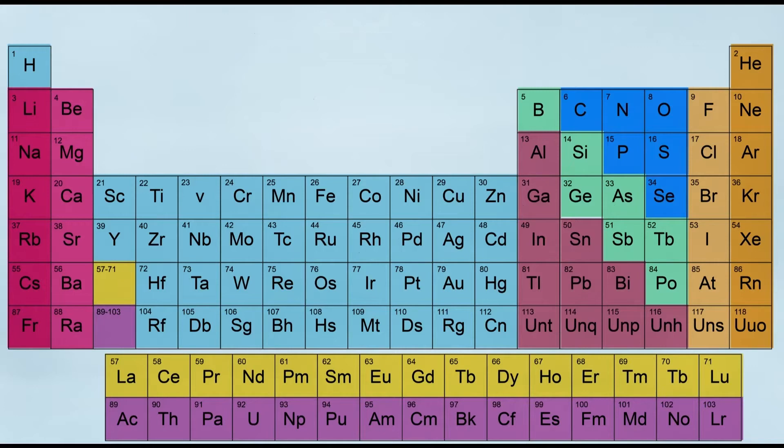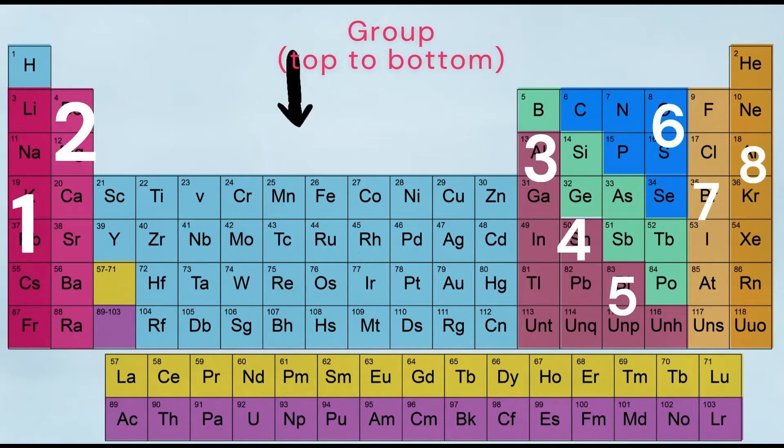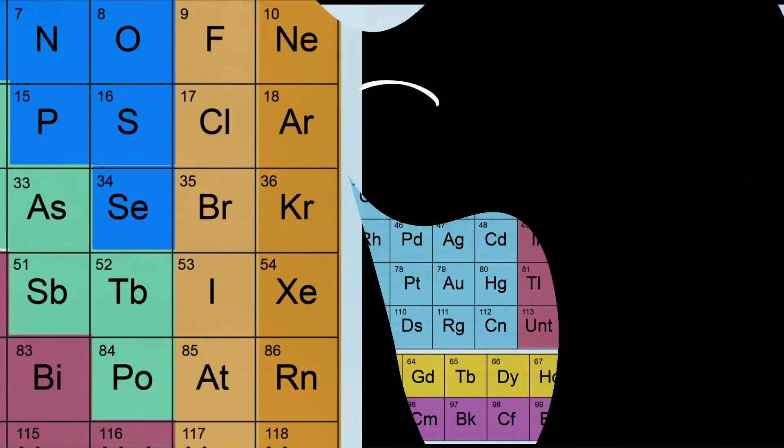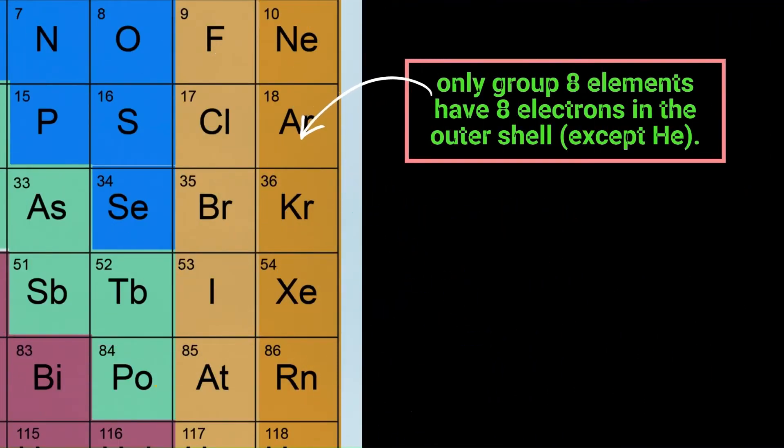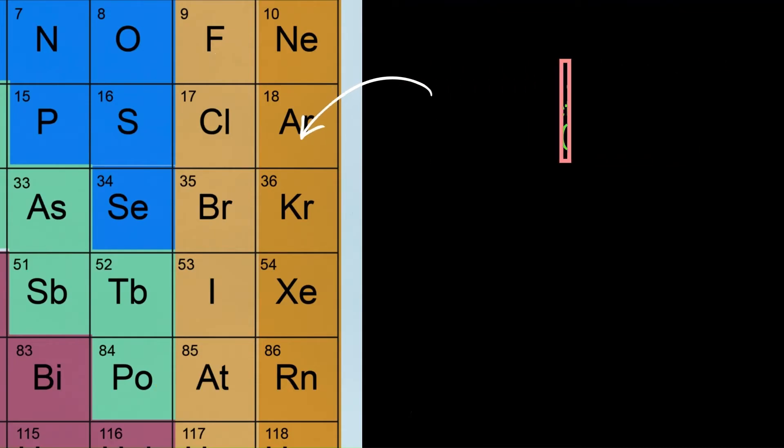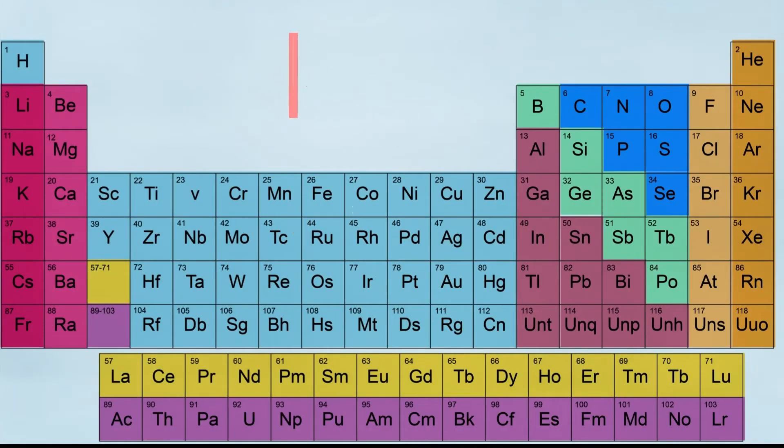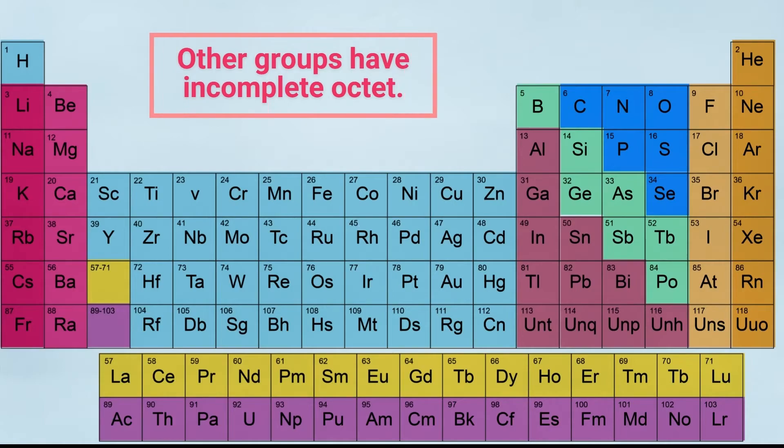This is known as stable shell. Look at the periodic table. Group is vertical arrangement of elements in the periodic table. Only group 8 elements except helium have complete octet. In other words, all other elements can react to complete their octet.